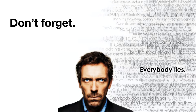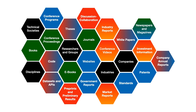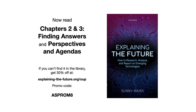We'll discuss this in detail in Chapter 3 of the book. The main thing is that there is a huge amount of good information out there. Listen to what people say, but then verify it for yourself. That's it for this lesson on information sources. Make sure to go and read Chapters 2 and 3 of Explaining the Future next. You should be able to get it from the library, but if you prefer your own copy, you can get a discount using the promotion code shown.